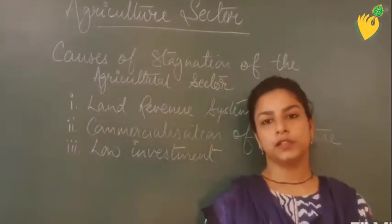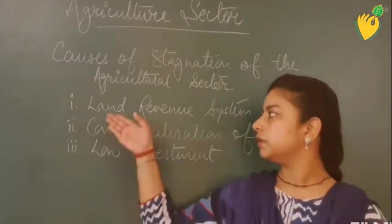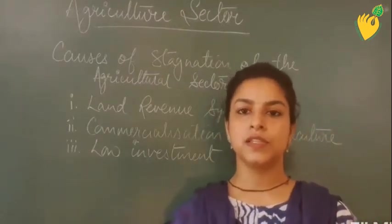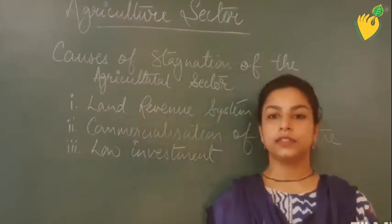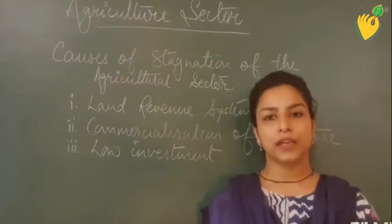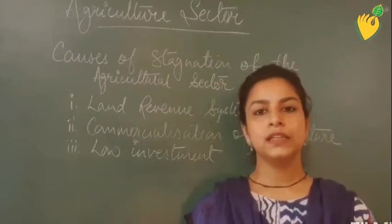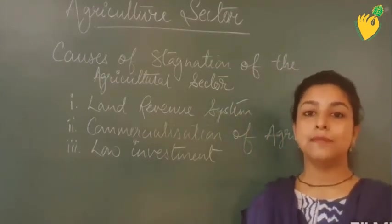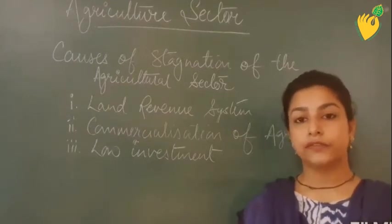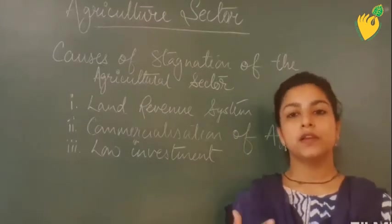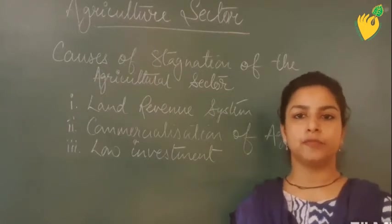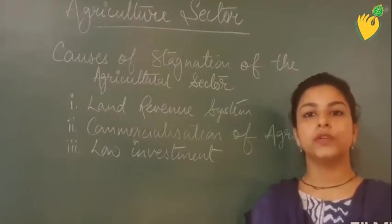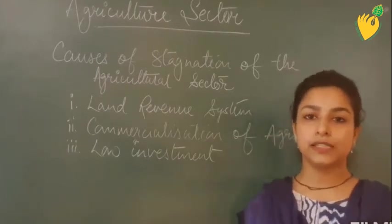Low investment is another cause for stagnation. Because of the land revenue system, nothing was left with the farmers to invest in their farms. There was also no initiative taken by the British government or by the zamindars to invest in the agricultural sector. Due to this low investment, there was no improvement in the farming sector — conditions remained the same for the past 120 years. Farmers were not capable enough and there was no initiative to improve their condition.